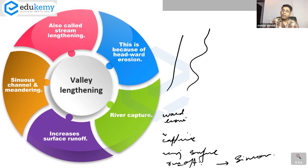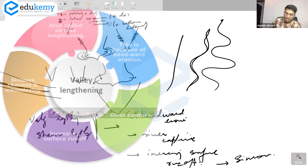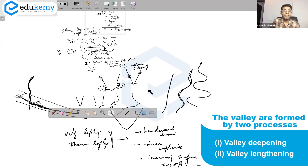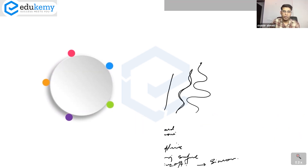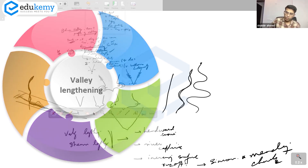Valley lengthening happens because of sinuous and meandering channels — rather than being a straight river, it takes bends, which increases the overall length. So the valleys develop because of valley deepening and valley lengthening. Valley deepening includes two processes, and valley lengthening includes four: headward erosion, river capture, increase of surface runoff, and sinuous/meandering channels.